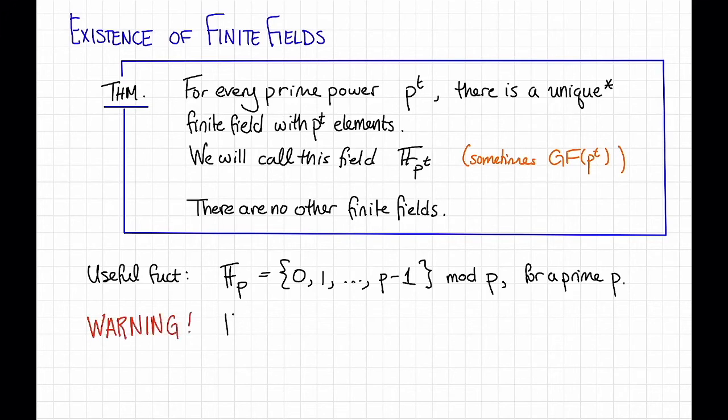A warning is that for t not equal to 1, the finite field of size p to the t is not equal to the numbers mod p to the t. We already saw an example of this with the numbers 0, 1, 2, 3 mod 4. 4 is a prime power, it's 2 squared, so there is some field of size 4, but that's not it. Fun exercise, try to come up with the multiplication and addition table for the finite field of size 4.